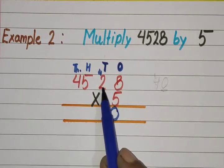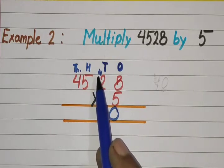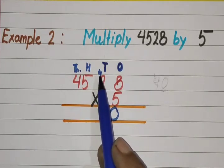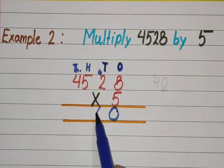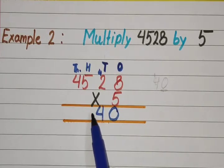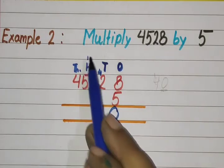5 times 2 is 10, plus the carry of 4, because it is carry. 10 plus 4 equals 14.